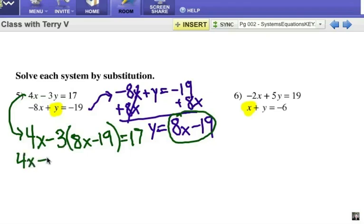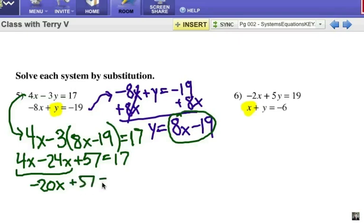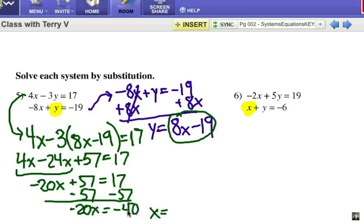4x minus 24x plus 57 equals 17. We're going to combine my x's together. That will be negative 20x plus 57 equals 17. We're going to subtract 57 from each side. Negative 20x equals negative 40. And x would be, because I divide both sides by negative 20, x would be a positive 2.